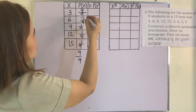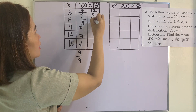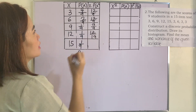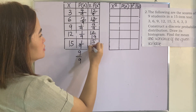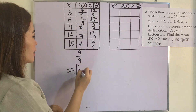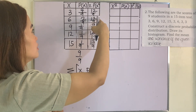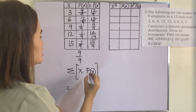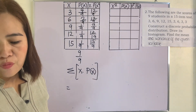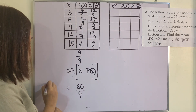Now let us multiply x times P(x) to get the mean. We have: 3 × (4/9) = 12/9, 6 × (2/9) = 12/9, 9 × (1/9) = 9/9, 12 × (1/9) = 12/9, and 15 × (1/9) = 15/9. Adding all the numerators: 12 + 12 + 9 + 12 + 15 = 60. So the mean is 60 over 9.